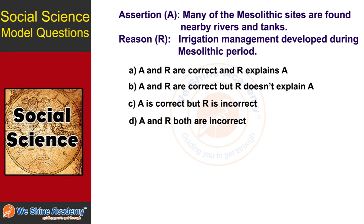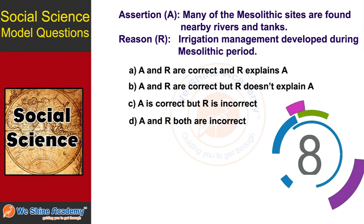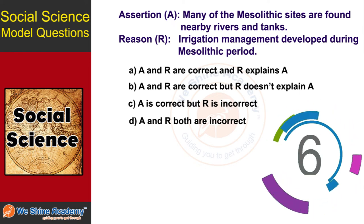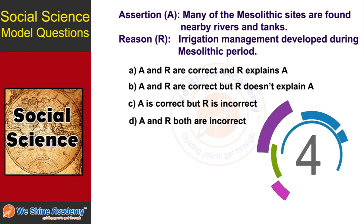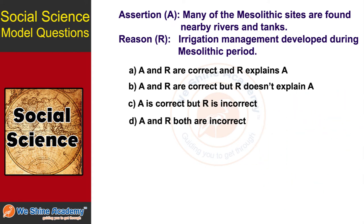The next question: find out whether the assertion and reason are correct or incorrect. Assertion: many of the Mesolithic sites are located near river sand dunes. Reason: irrigation management developed during the Mesolithic period. The answer is Option D — both Assertion and Reason are incorrect.